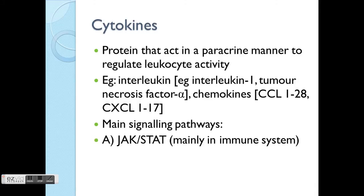Cytokines mainly activate two main pathways. The first is JAK-STAT, which is mainly in the immune system. The second is called NF-κB. The reason to learn all these pathway names is that more and more drugs are being developed that target these pathways — so when you look at drugs in the future, you'll know roughly what's going on. The key things to remember: know which pathway, some basic description, and which receptors activate which pathways and their effects.